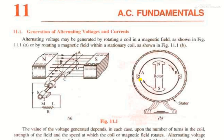The principle of working involves two cases which give us a clear idea: either the conductor should move within a stationary magnetic field, or the magnetic field should move with respect to a stationary conductor. The relative motion between the conductor and the magnetic field actually causes the AC voltages.